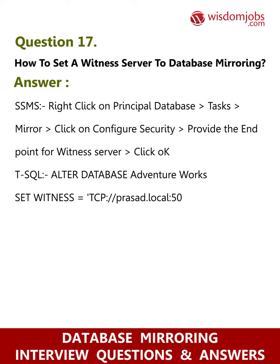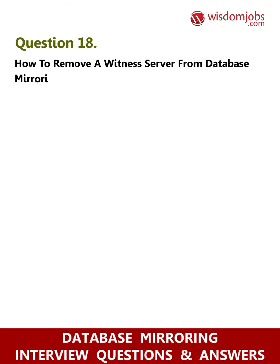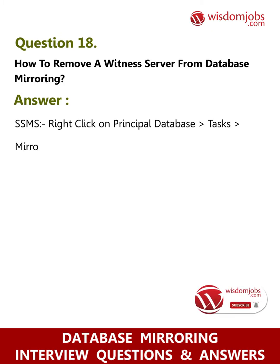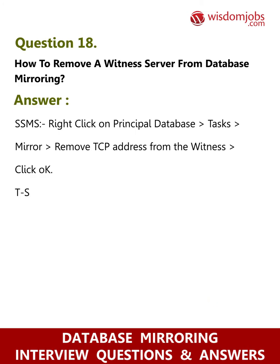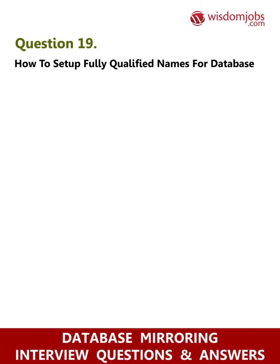Run this T-SQL command from the principal server. Question 18: How to remove a witness server from database mirroring? Answer via SSMS: Right-click on the principal database, go to Tasks, Mirror, remove the TCP address from the witness, then click OK. Via T-SQL: ALTER DATABASE AdventureWorks SET WITNESS OFF.